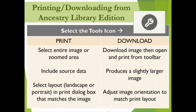New users quickly learn that your computer's Ctrl or Cmd plus P shortcut does not always print the desired results when working with original images in Ancestry Library Edition. To print or download original images in this database, you need to select the tools icon discussed previously. Within this icon, you'll find options to help you customize your print or download, as indicated on this slide.